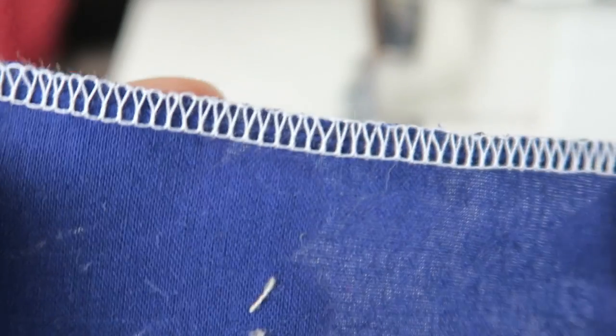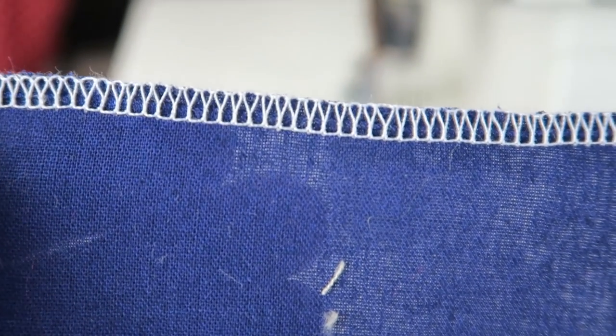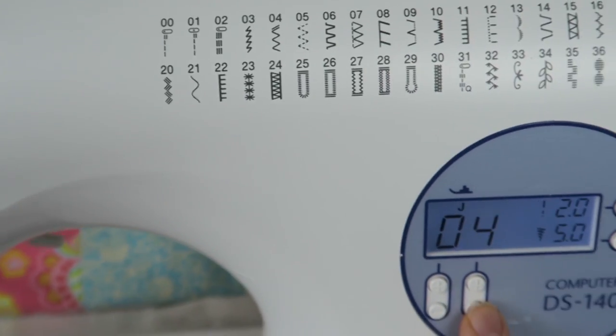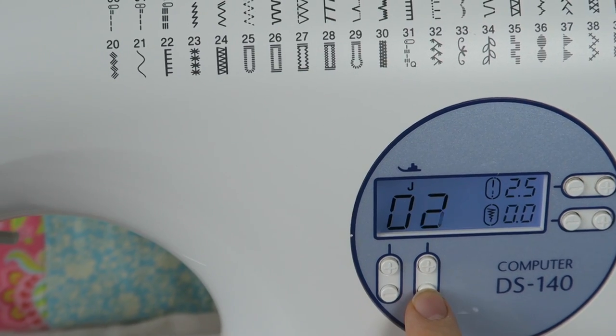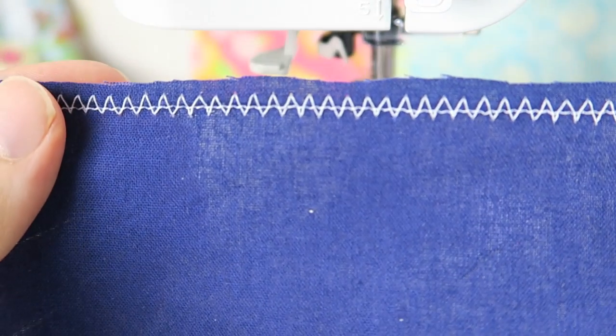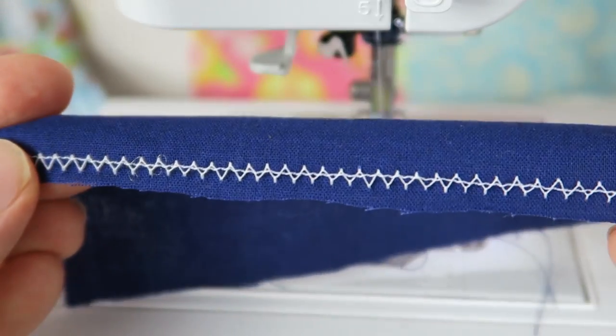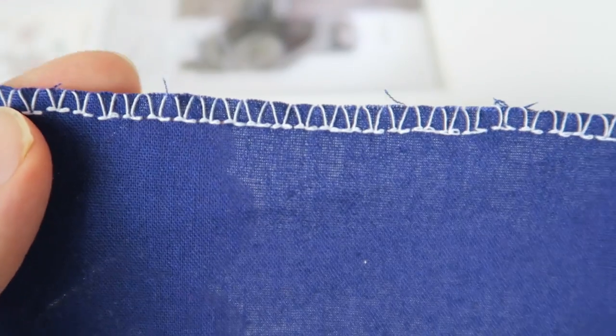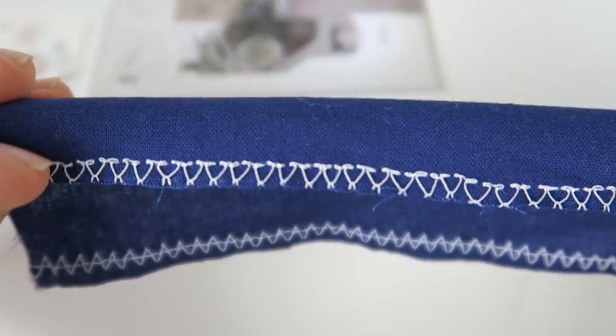I hope this little video was useful for you. You do not need a serger or overlocker to sew all my projects. You can just finish the edges in these little ways that I showed you this time. And in the next video, we're having a look at top stitching and understitching.